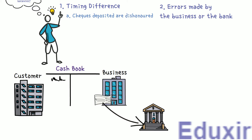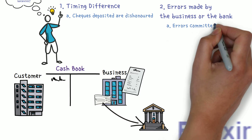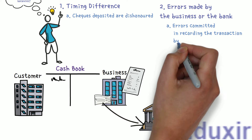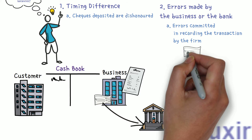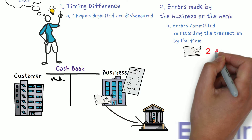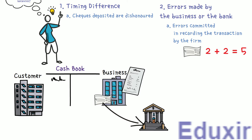The firm will know about this only after the bank statement is received. As a result, there will be a difference in the passbook and the cashbook balances. To limit the scope to this problem, let us consider only this one reason for timing difference. Now, coming back to errors made by the business or the bank — errors committed in recording the transaction by the firm could be due to omission or wrong recording of transactions relating to cheques issued, cheques deposited, and wrong totalling, committed by the firm while recording entries in the cashbook.